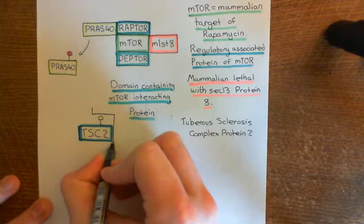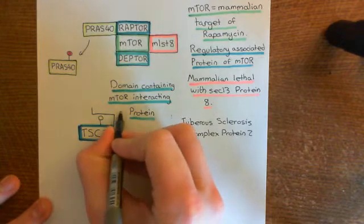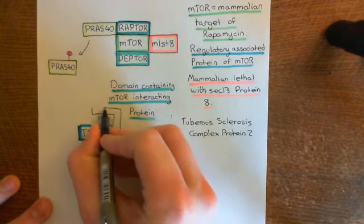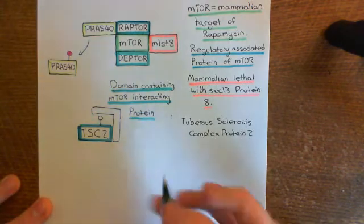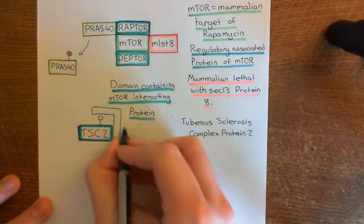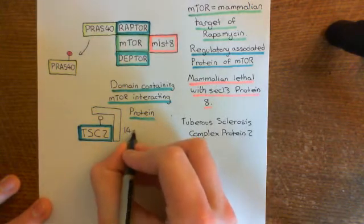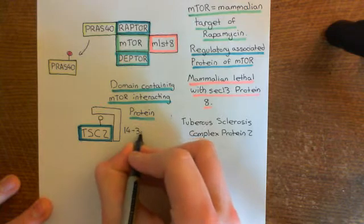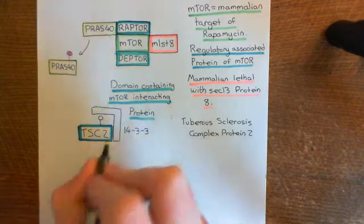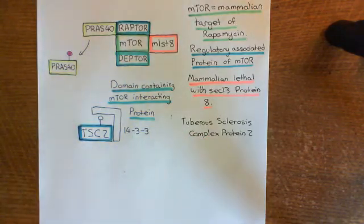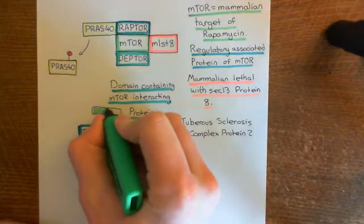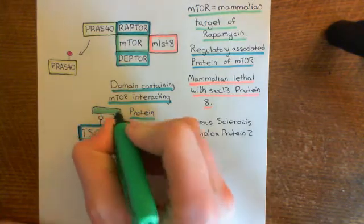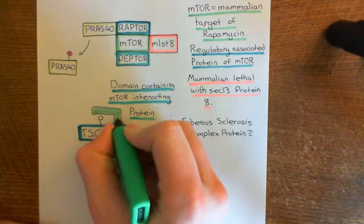When TSC2 is phosphorylated, it can now bind to another protein. This new protein that is going to bind to the tuberous sclerosis complex 2 is known as 14-3-3, which is a very catchy name. And 14-3-3 is going to inhibit this tuberous sclerosis complex protein 2.